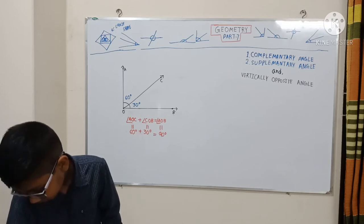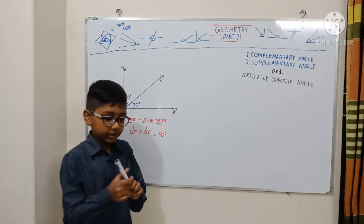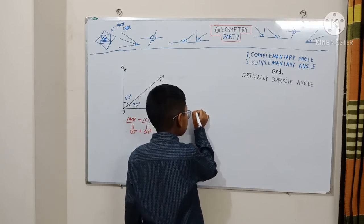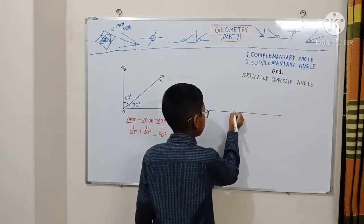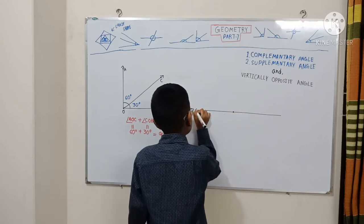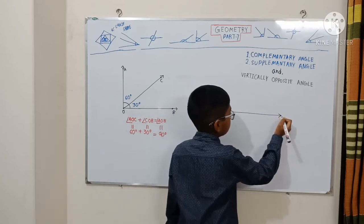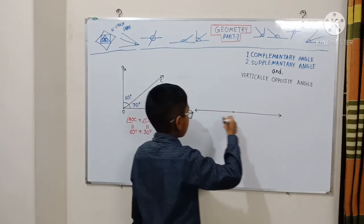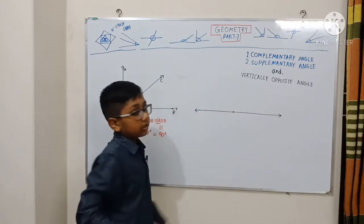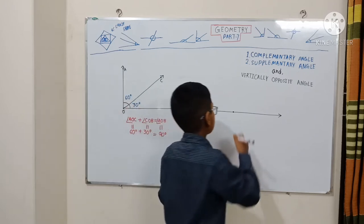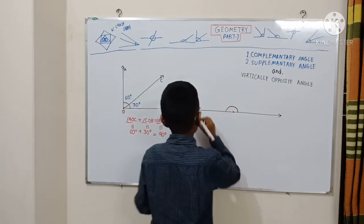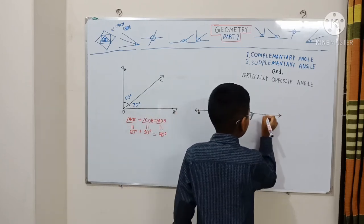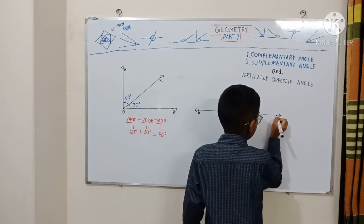Now let me draw the supplementary angle. I'll draw this line — it's going in opposite directions: one is going right and one is going left. This is the base. The left one conducts the degree. This point is A and this point is B.